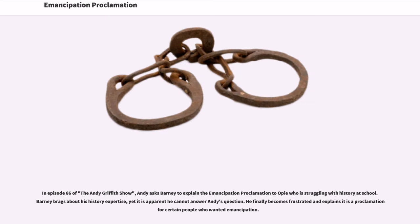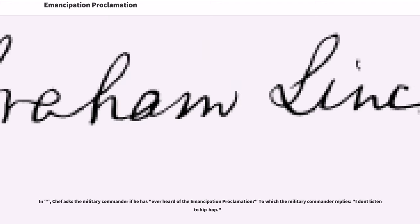In episode 86 of the Andy Griffith Show, Andy asks Barney to explain the Emancipation Proclamation to Opie, who is struggling with history at school. Barney brags about his history expertise, yet it is apparent he cannot answer Andy's question. He finally becomes frustrated and explains it is 'a proclamation for certain people who wanted emancipation.'